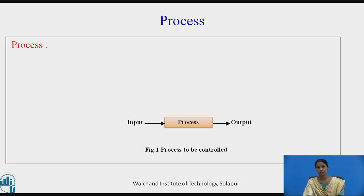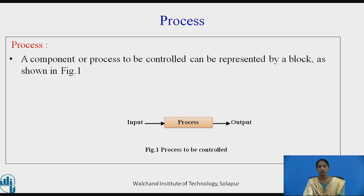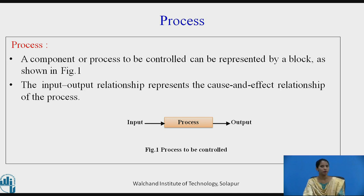Let us see what is a process. A component or a process to be controlled can be represented by a block diagram. The input-output relationship represents the cause and effect relationship of the process. The input is provided to the process or a plant.